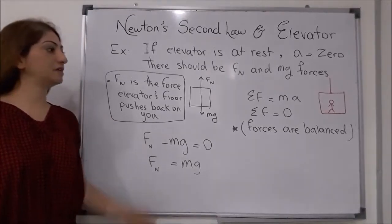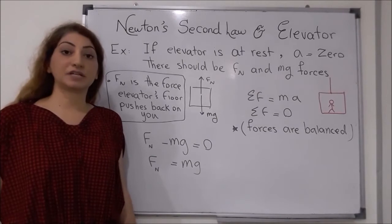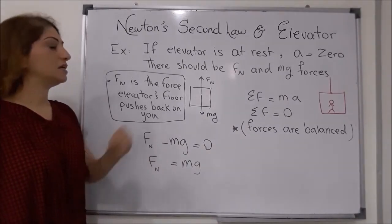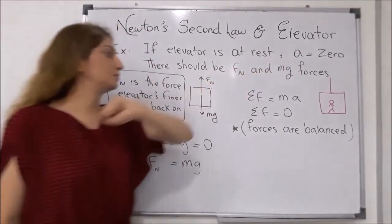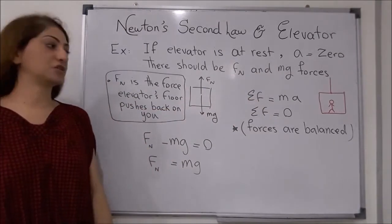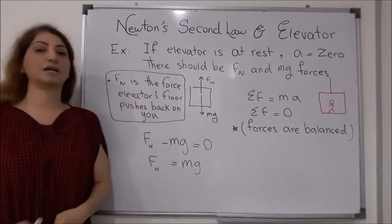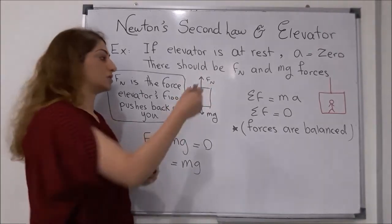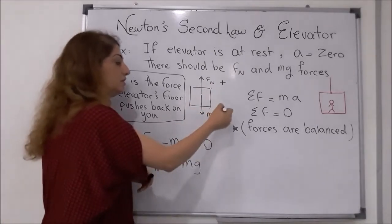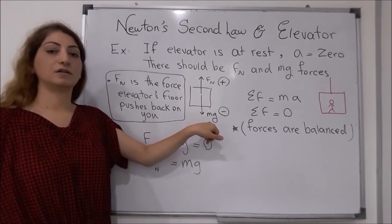Let's see if we have a person inside an elevator and the elevator is at rest, not moving. What kind of forces are exerting on the person? The elevator is at rest, meaning there is no acceleration — acceleration is zero. So if the acceleration is zero, the sum of the forces, which means mass times acceleration, will also be zero. The normal force in the elevator is the force that the elevator floor pushes back on you, applying upward in the positive direction.